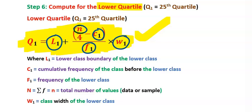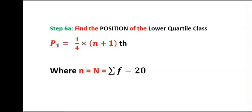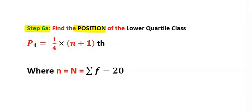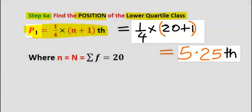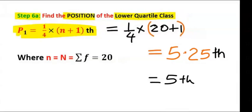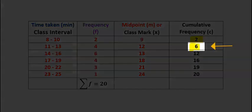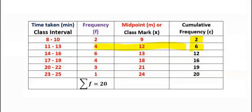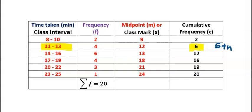Step 6A: find the position of the lower quartile class using this formula. The position of the lower quartile class is the 5.25 position; however, we round it off to the nearest whole number, giving us the 5th position. From the cumulative frequency, the 2nd position is here, so the 5th position falls in this row. Hence, we trace it on this line, and this becomes our lower quartile class.